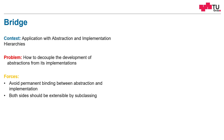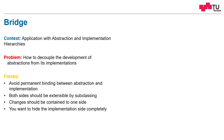So both sides should be extensible by subclassing. For example, our window system should be extendable and our underlying graphics library should be extensible. Changes should be contained to one side — for example, if we develop a fancy animation system on our window side, the underlying graphics library should not have to change. And we want to hide the implementation side completely from the client, so the client doesn't have to implement DirectX matrices and pipes in order to implement a graphical system — it just wants to use buttons, text boxes, and so on.